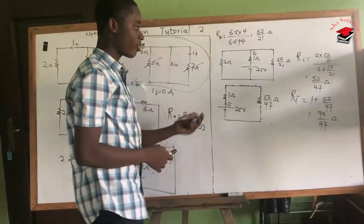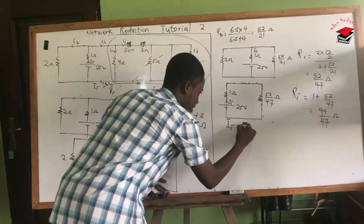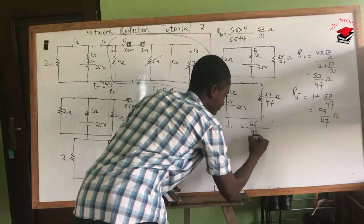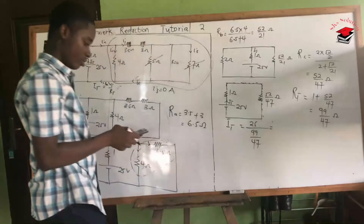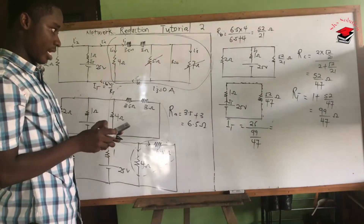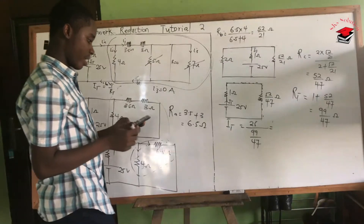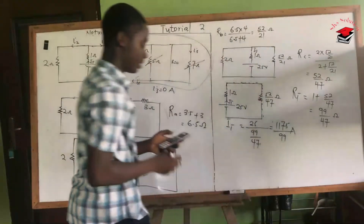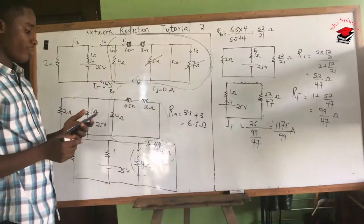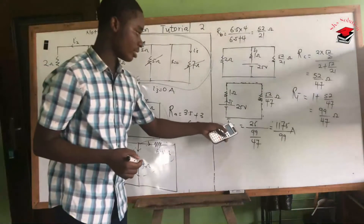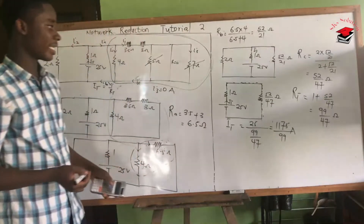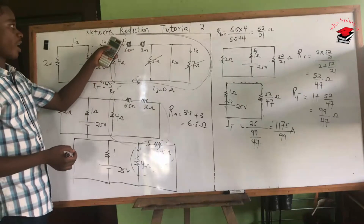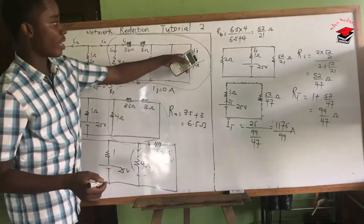We can now calculate the total current IT. IT equals the total voltage 25 divided by the total resistance 99/47 ohms, giving us 1175/99 amperes, whose decimal equivalent is approximately 11.86 amperes. Since we now have the total current, we can use it to find the current in the 2-ohm resistor (I2) and through the 3.5-ohm and 3-ohm series (I1). We already know I3 = 0.